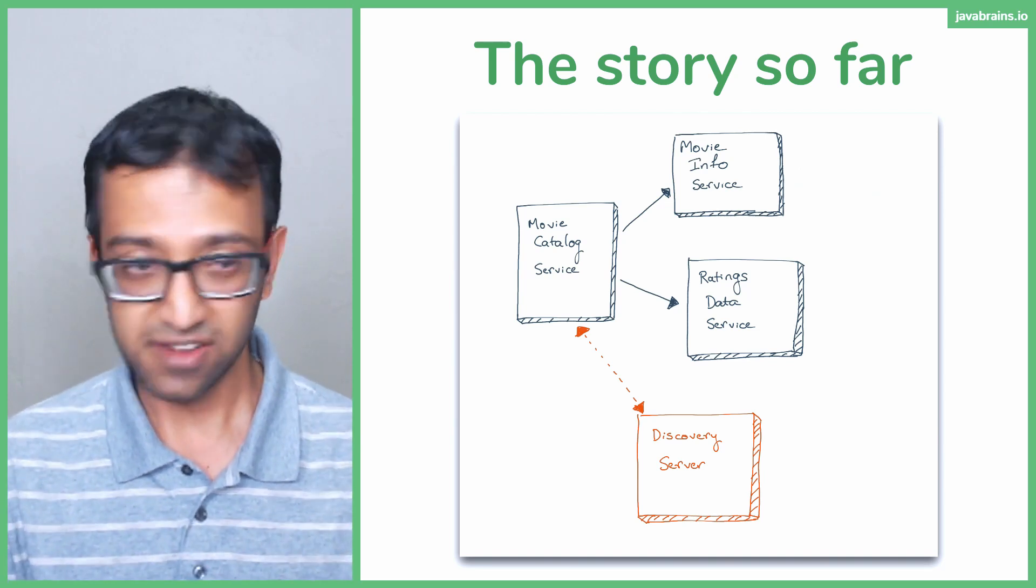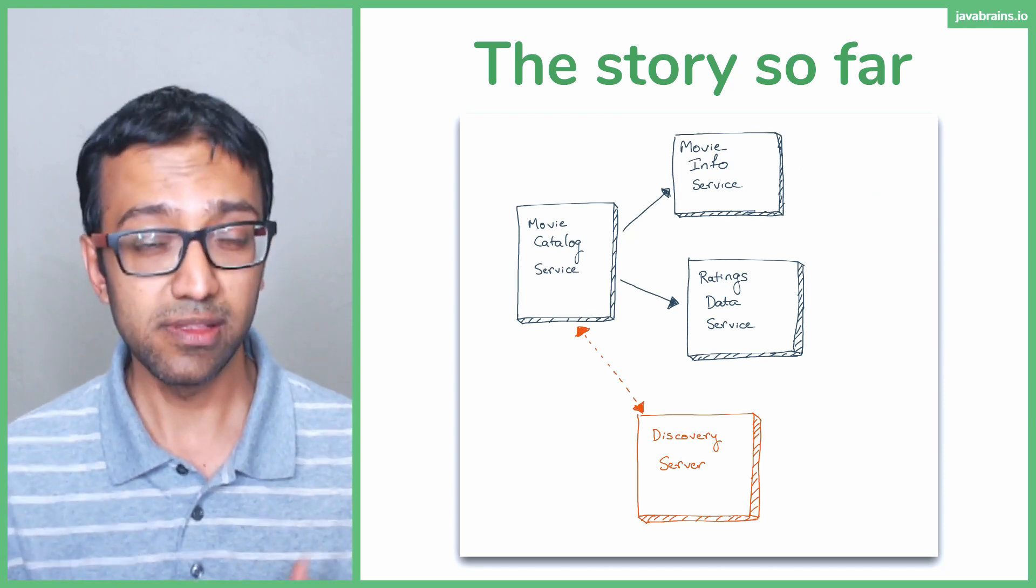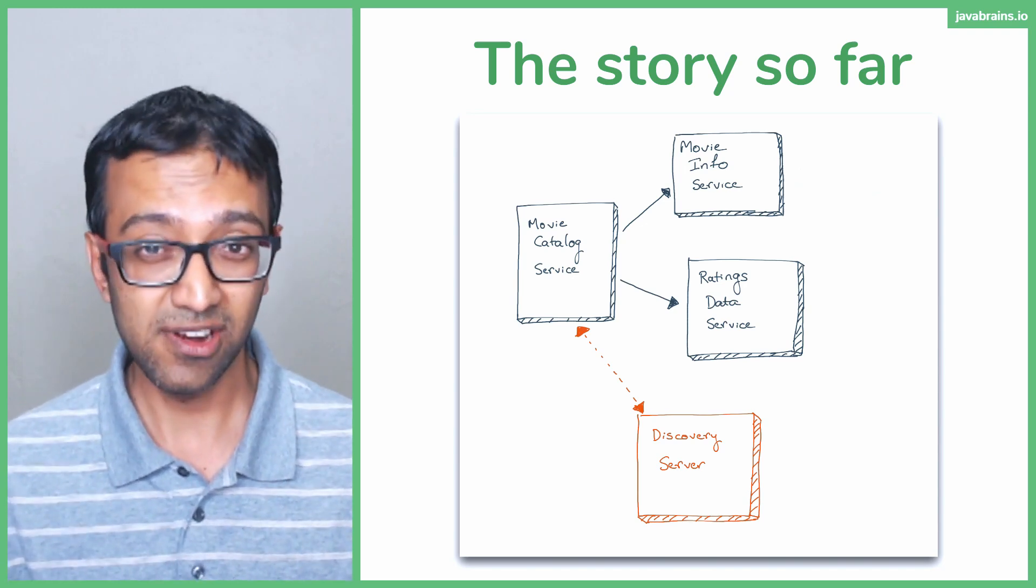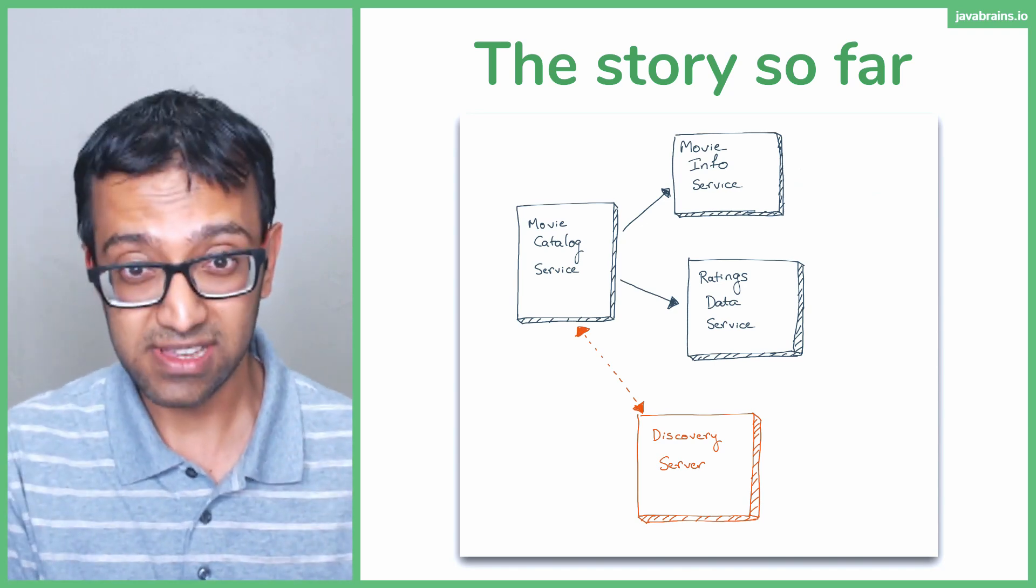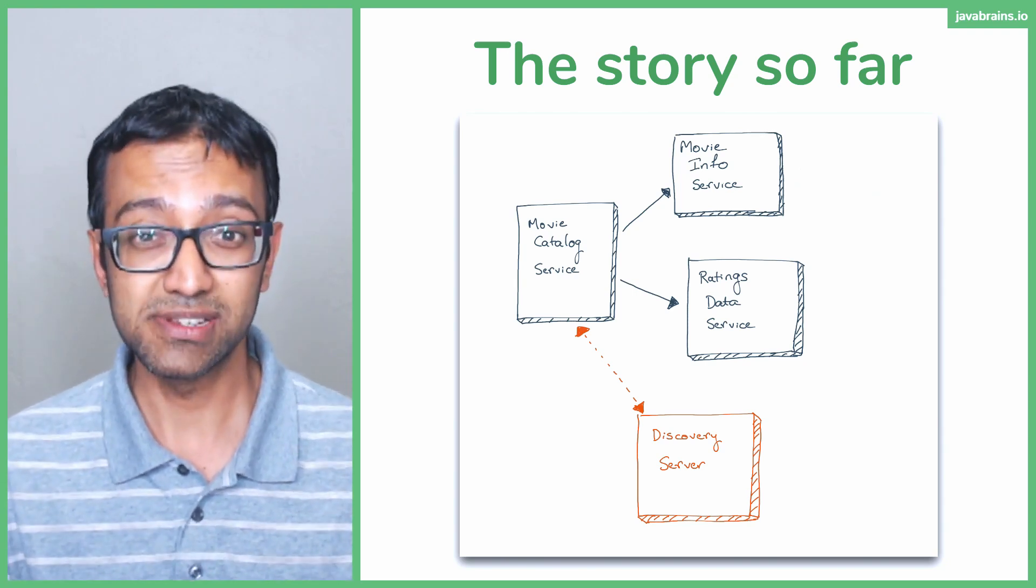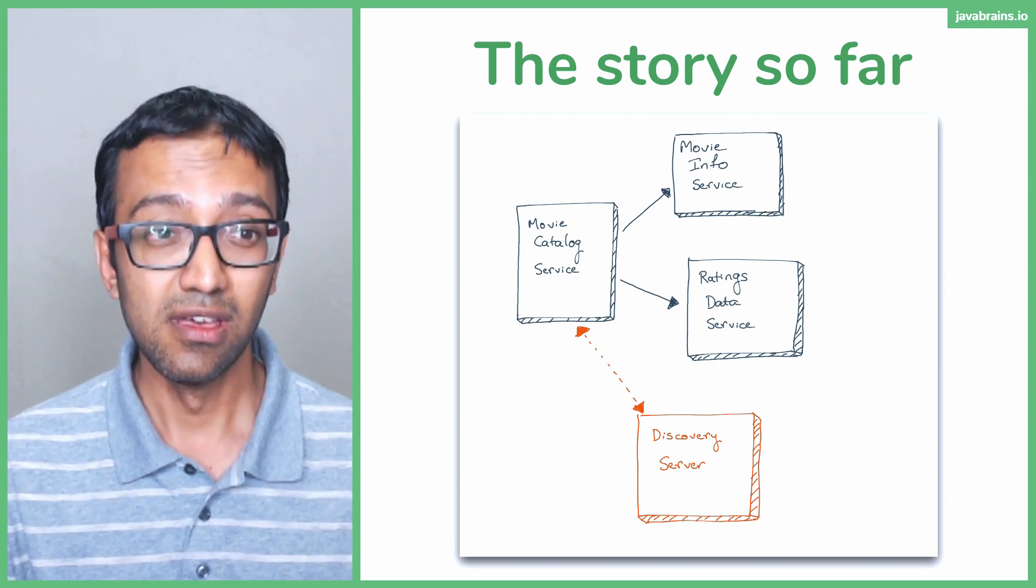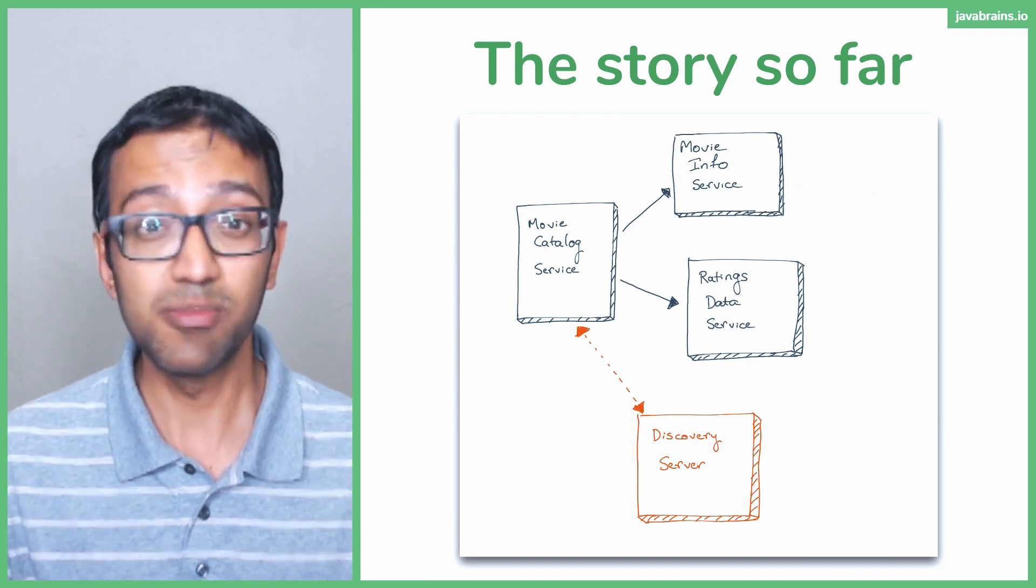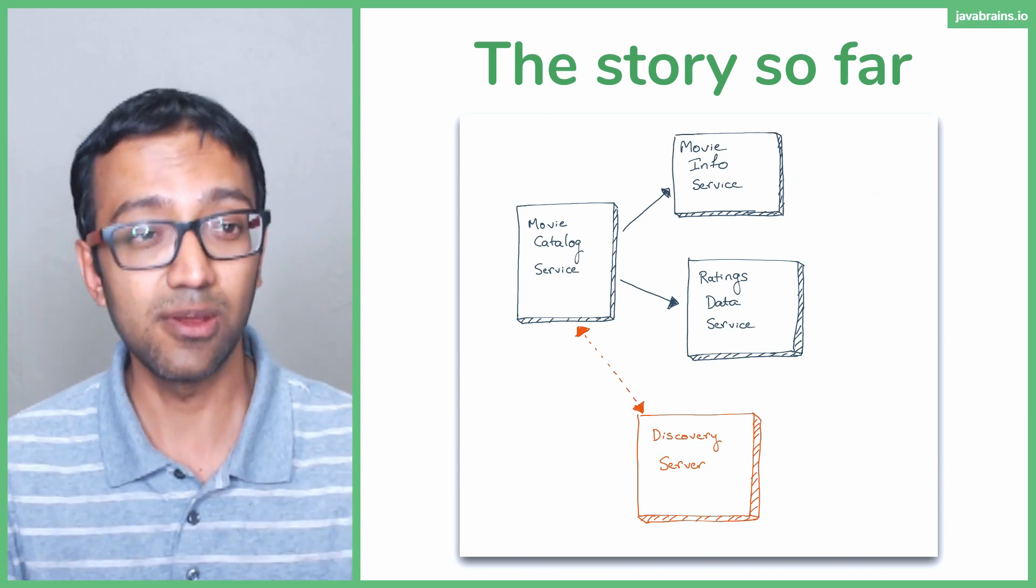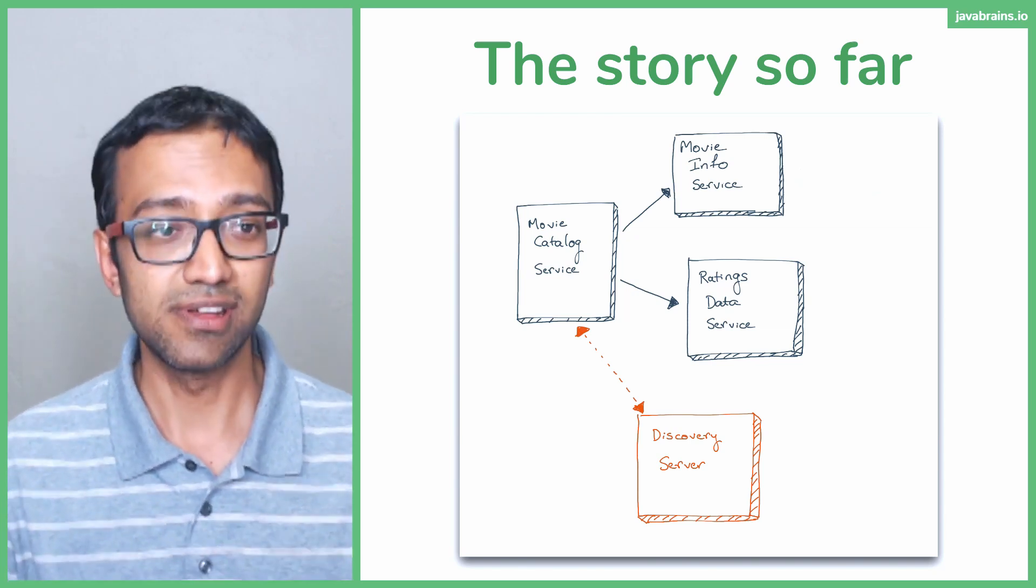The ratings data service was something that stored the user's rating. We had hard-coded it because we didn't want to do all the database stuff. We didn't want to sidetrack from the microservice architecture stuff. So it was no database connectivity per se. It was just a hard-coded list of movie IDs and ratings which everybody gets. So it's like movie ID 1, rating 3, movie ID 2, rating 5. Just a hard-coded list and it would return that.